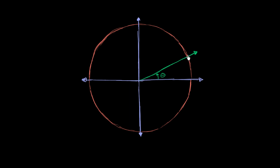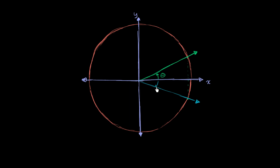Now let's flip the terminal ray of this angle over the x and y axes. First, let's flip it over the positive x-axis — you go straight down, then the same distance on the other side, and you get a new ray. Using our convention that counterclockwise from the x-axis is a positive angle, this reflected ray is clockwise — going theta below the x-axis — so we call this angle negative theta.